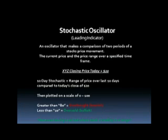If this value is greater than 80, we have an overbought or bearish situation. And if this value is less than 20, we have an oversold or bullish situation. Keep in mind that the stochastic oscillator is best used during a period where the stock price is trading in a range.